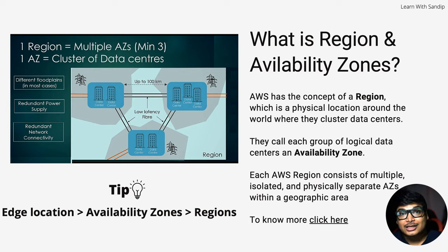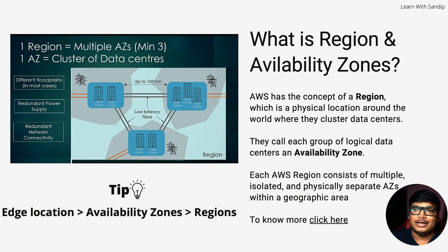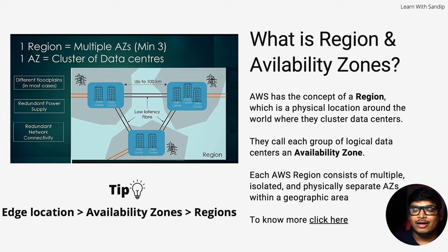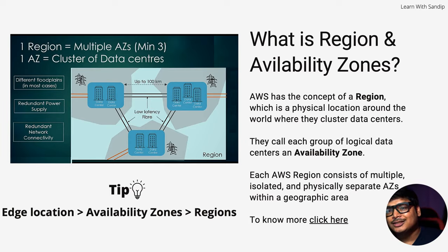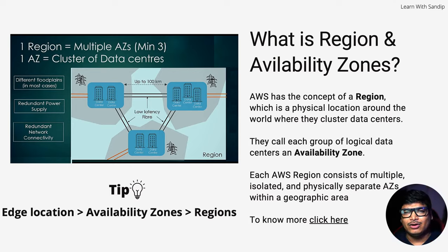One availability zone equals a cluster of data centers — buildings with all the storage, CPU, RAM, and resources running inside. Edge locations are greater in number than availability zones, and availability zones are greater than regions. One region is a geographical area with multiple availability zones, each having multiple clusters of buildings with computing resources. There should be absolutely zero confusion between regions and availability zones if you want to excel in AWS.